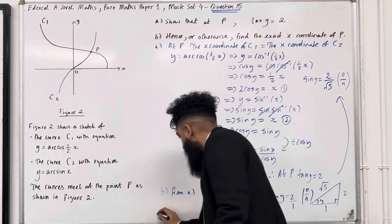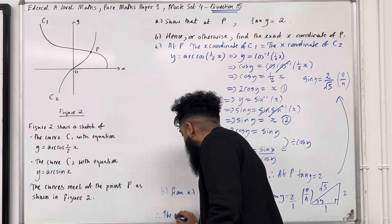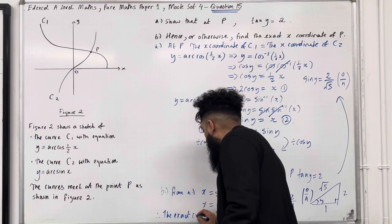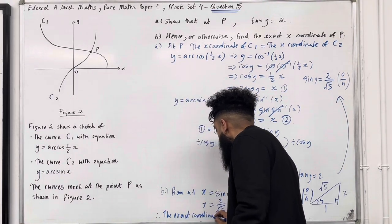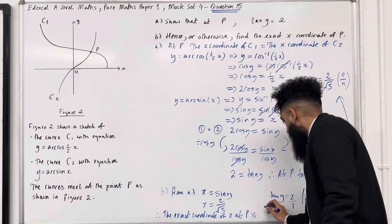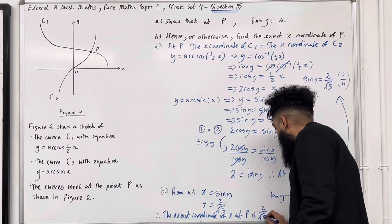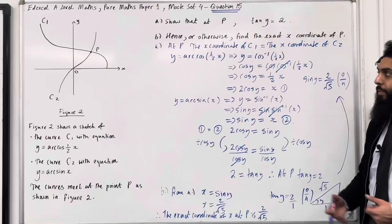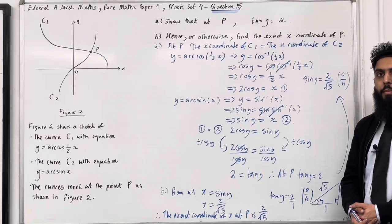Therefore, the exact coordinate of x at P is 2/√5. This completes Question 15 of Pure Maths Paper 1, Mock Set 4.